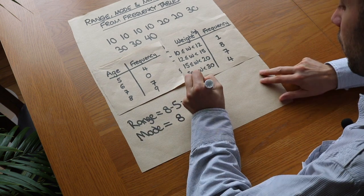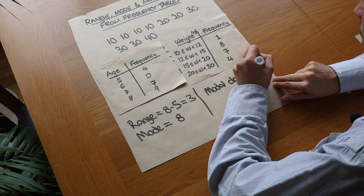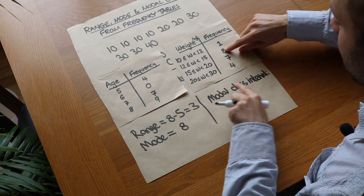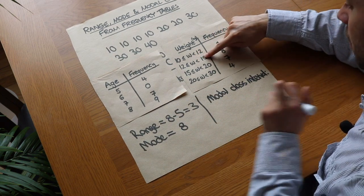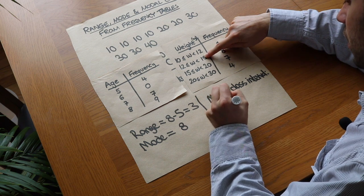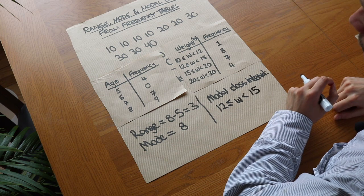What about here? We want the modal class interval, and that is the interval that occurs most frequently. Well, we can see that this is the highest frequency, so this is going to be the modal class interval, so we just copy out 12 is less than or equal to w is less than 15. Well done if you got that right.